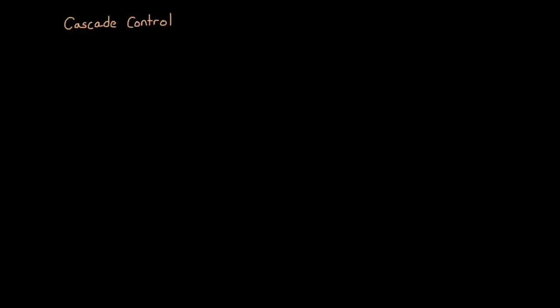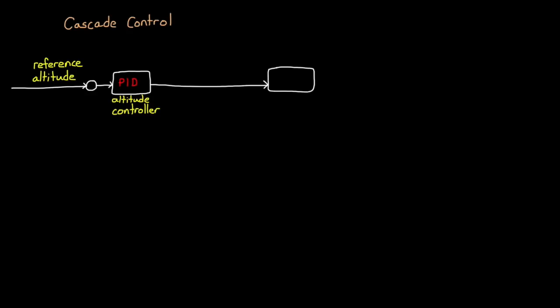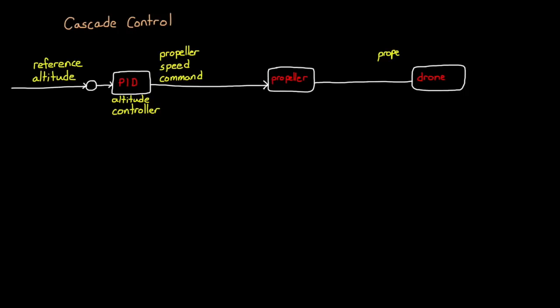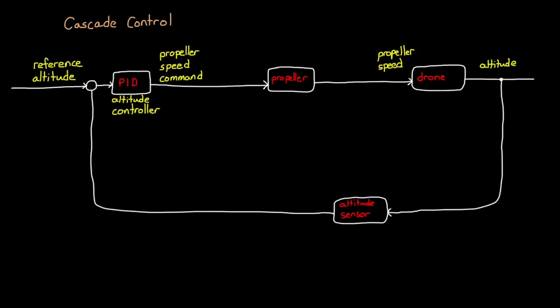What is cascade control? To answer that, let's go back to the example we used in the second video of this series: an altitude controller for a quadcopter drone. Recall the block diagram for this system. We start with a reference altitude — the altitude we want the drone to hover at — which goes through a comparator to generate an error term, fed into a PID controller that generates a propeller speed command. The propeller spins up, generating a force that adjusts the drone altitude, and the altitude is measured by a sensor and fed back into the comparator. This is our classic feedback loop with a single PID controller.